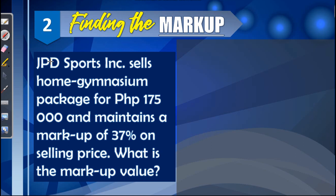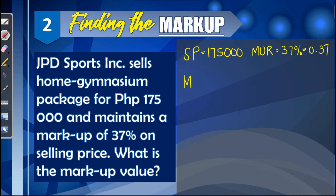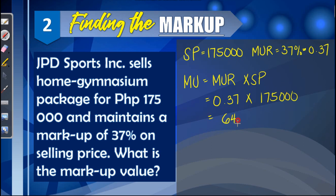Next, let us find the markup value based on selling price. JPD Sports Incorporated sells a home gymnasium package for 175,000 and maintains a markup of 37% on selling price. What is the markup value? Given: selling price = 175,000; markup rate = 37% or 0.37. MU = MUR × SP = 0.37 × 175,000 = 64,750. This means the markup value of the home gymnasium package is 64,750 pesos.